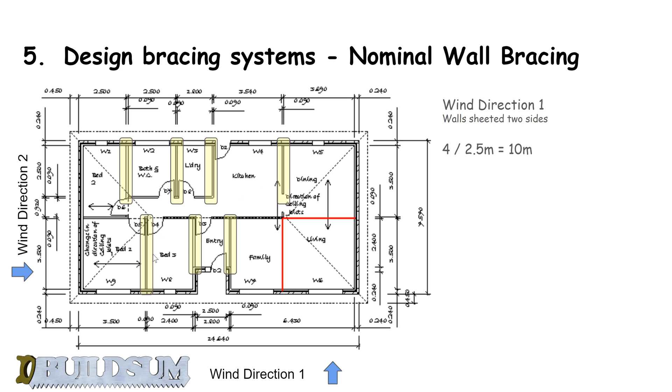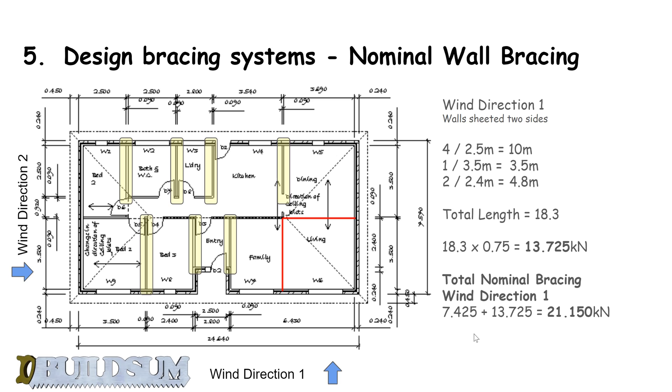Four walls 2.5 meters long, then one wall at 3.5 meters long, then two walls at 2.4 meters long gives us 4.8. So times 4 by 2.5 gives you 10, 1 by 3.5 gives you 3.5, 2 by 2.4 gives you 4.8—total length of 18.3 meters. 18.3 times our bracing capacity for double-sided walls, 0.75, gives us 13.725 kilonewtons.